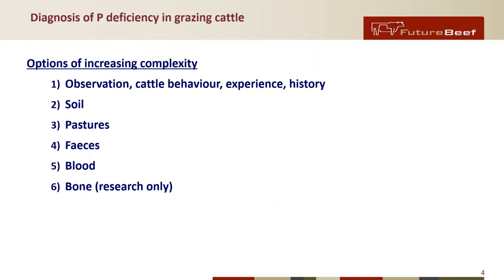In terms of thinking about feed efficiency and deciding how much of a problem we've got, we have options of increasing complexity. At the most basic we can think about things like cattle behaviour, experience in the country, the history of what's gone on, and the performance of cattle. We can look at soils analyses, pasture analyses, fecal analysis, and also analyzing blood for P levels. The final option is looking at the phosphorus content of bones, however because that basically involves surgical procedures, it's really only suitable for research-type situations.